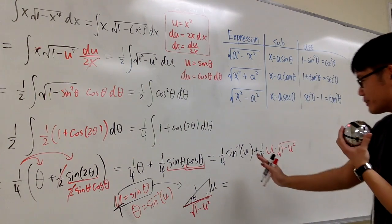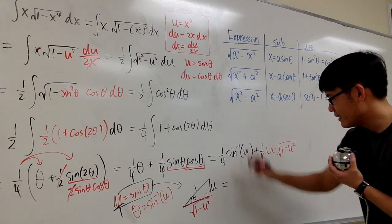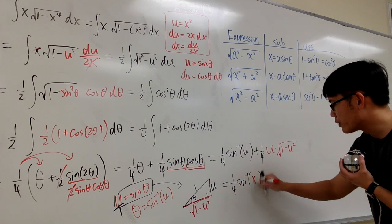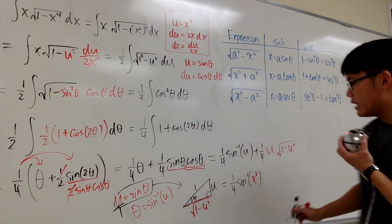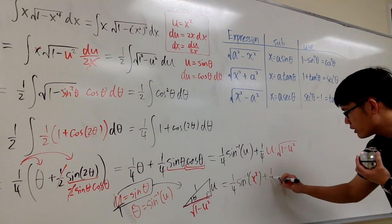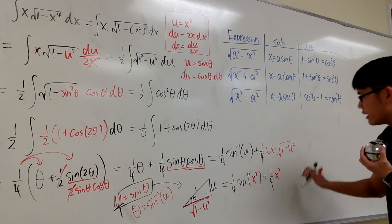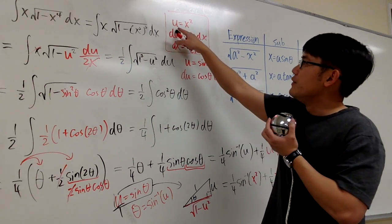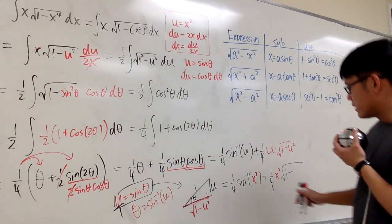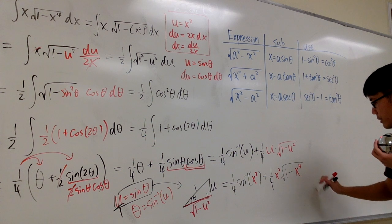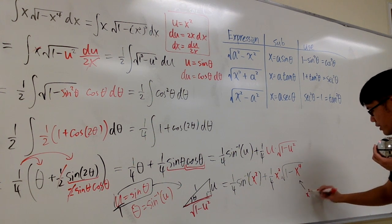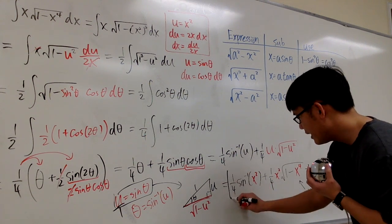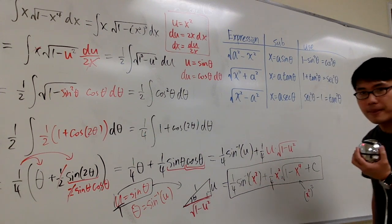Now u equals x squared, so we plug that in. Our final answer is 1 over 4 times inverse sine of x squared, plus 1 over 4 times x squared times square root of 1 minus x to the fourth power, plus C.